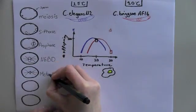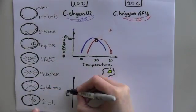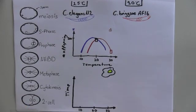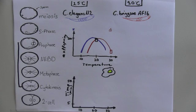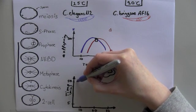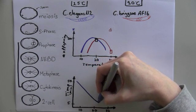As expected, the timing of cell division is temperature dependent. We measured the interval length from pronuclear meeting to cytokinesis onset. This interval takes almost 50 minutes at 5 degrees and only 5 minutes at 25 degrees in C. elegans.